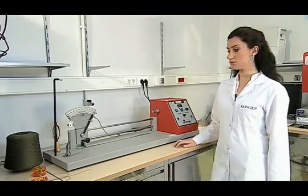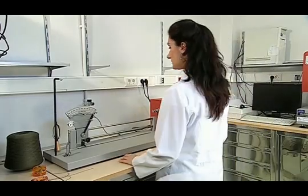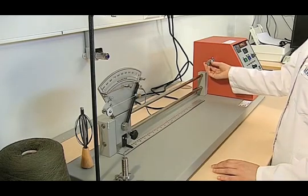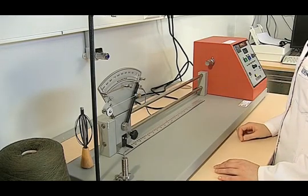At first, we prepare the device for the test. The twist measuring device has two nippers. Each of these nippers has the ability to move in either direction.